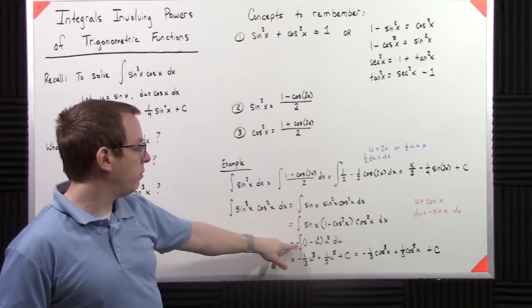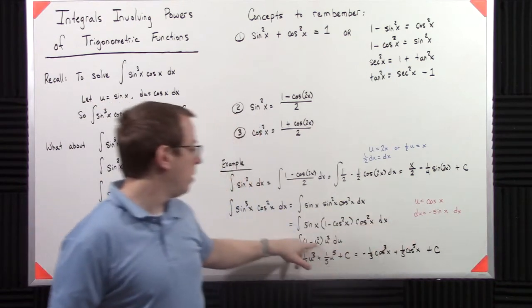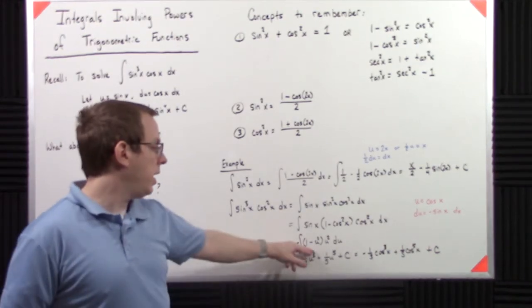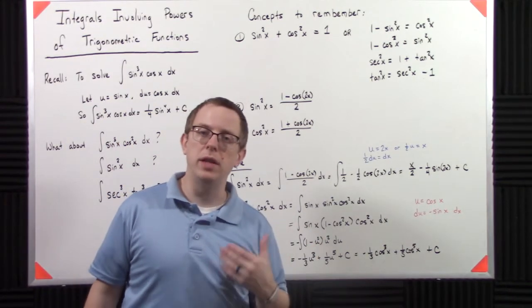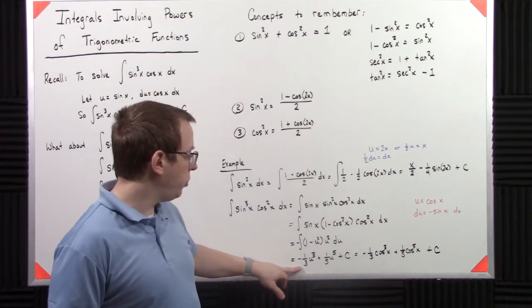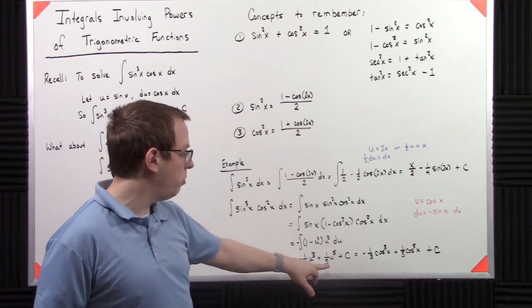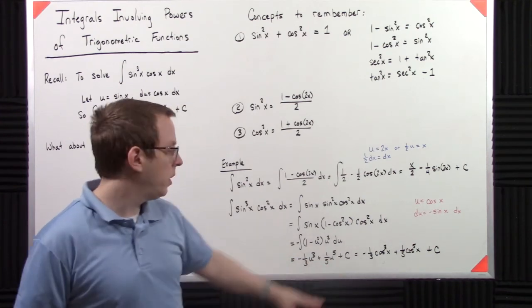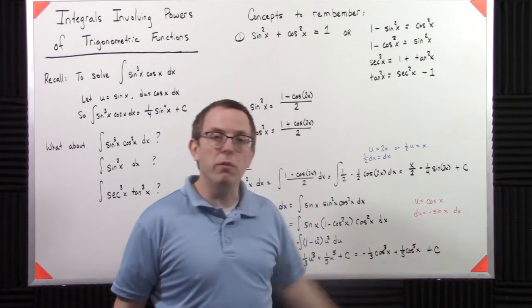So that brings out a negative to the front. So I have 1 minus u squared times u squared du. And again, I'm not going to walk you through how to anti-derive this. Hopefully you feel comfortable doing that on your own. That gets you negative 1 third u cubed plus 1 fifth u to the fifth plus c, at which point we convert back to cosines.